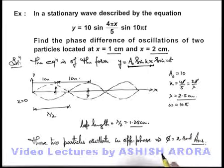If in a particular case two given particles are located in the same loop, then we know well that all particles in a loop oscillate in same phase. In that case, phase difference can be taken as zero.